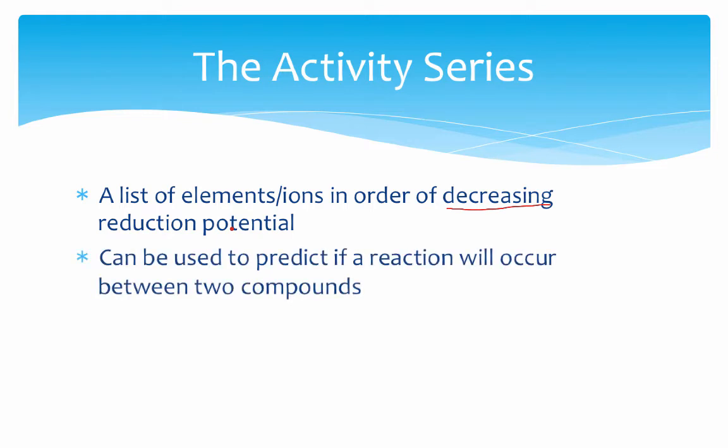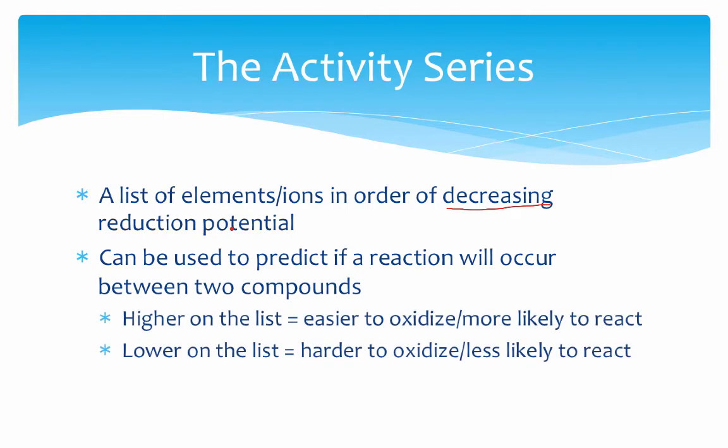So ultimately then, this is a tool that can be used to predict if a reaction will occur between two different compounds. If a substance is higher on the list, it is easier to oxidize. The more easily something is oxidized, the more likely we'll get a reaction to occur. The lower things are on the list means they are more difficult to oxidize, and they are less likely to react. So more and less is probably the things I should have underlined here, as opposed to circling the word react.